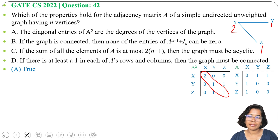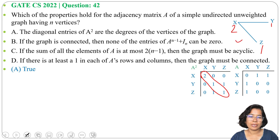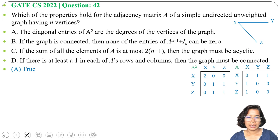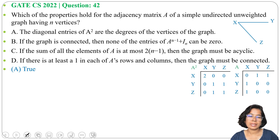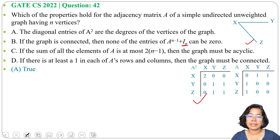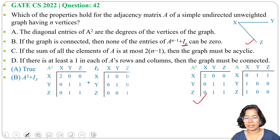Option B: If the graph is connected, then none of the entries of A^(n−1) + I_n can be 0. For this graph, n equals 3, so A^(n−1) is A², which we already have. We need to add A² with I_3, the identity matrix.